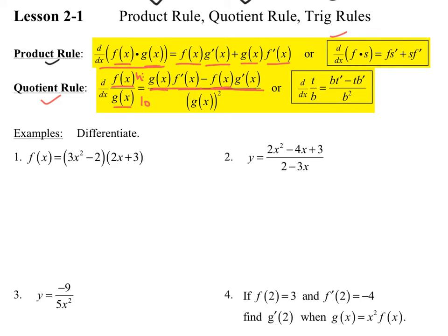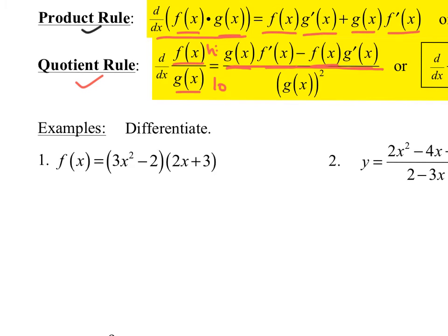Those are two rules we'll use. My students usually are better at the quotient rule because they sing the song, and then they forget about the product rule. So there are two ways to do an example like this. We can expand — if I just do FOIL, I can take the derivative — and then you can just take the derivative using our polynomial power rules.